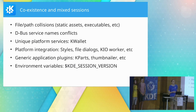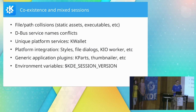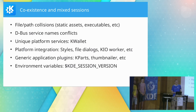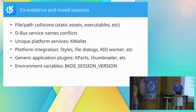The most common issue is filesystem collisions — things installing in the same location — usually referred to as co-installability. That's only part of the bigger coexistence story; it's the one we run into during build time, which makes it easy to deal with. The other ones tend to be more nasty. For example, DBus service names have to be unique, so we can't have two processes claiming the same name. For services like the wallet system, whether an application can restore its credentials shouldn't depend on whether it's using Qt 5 or Qt 6.